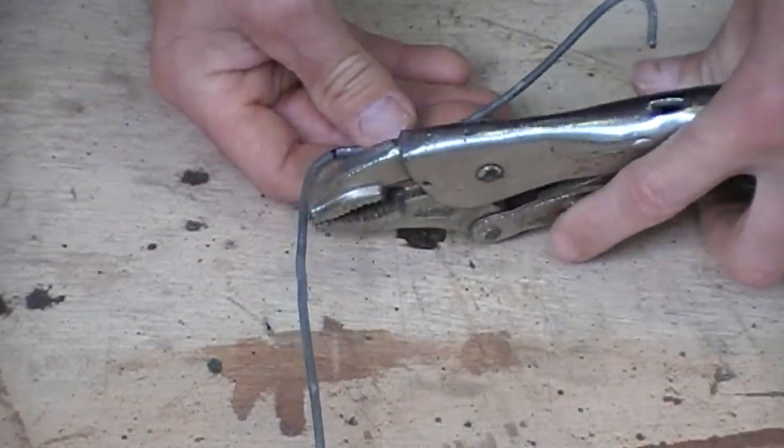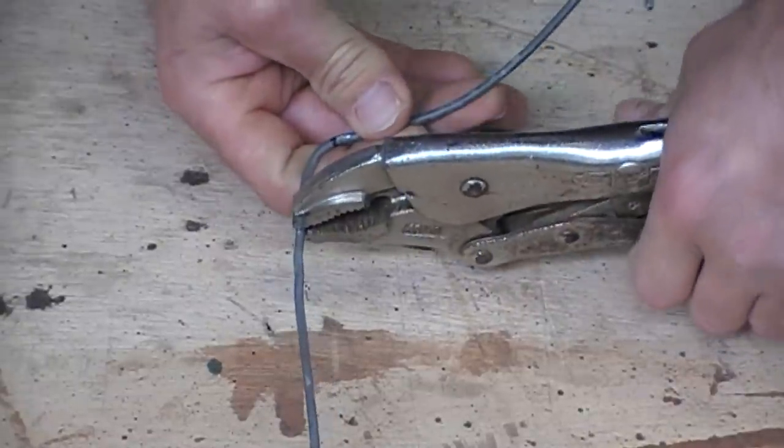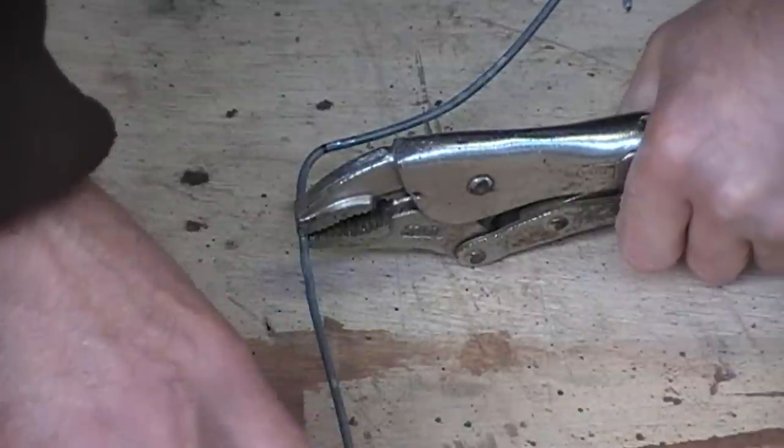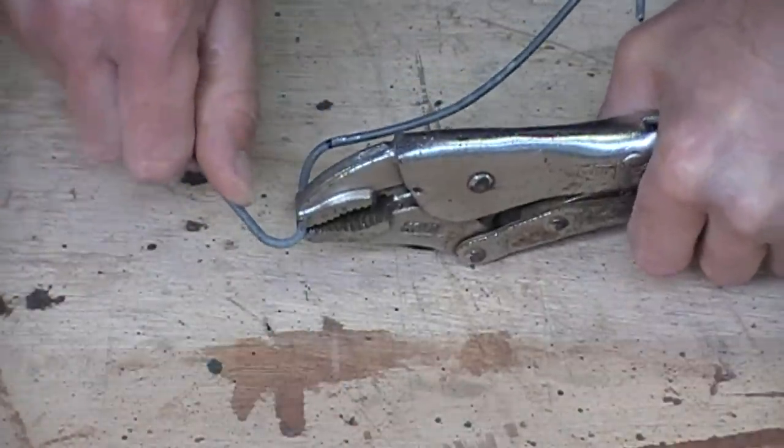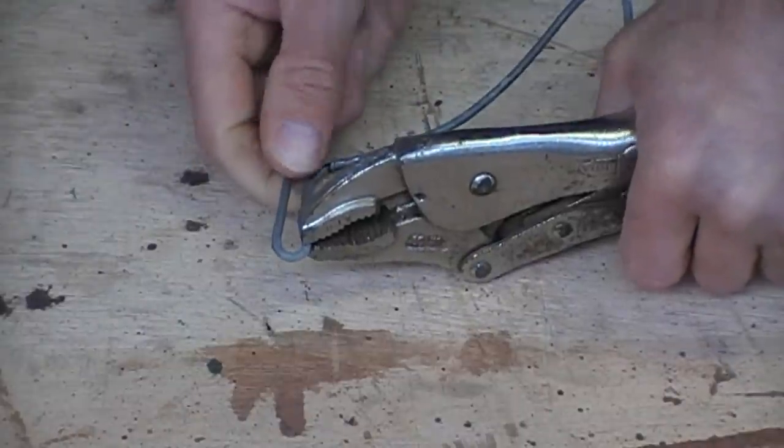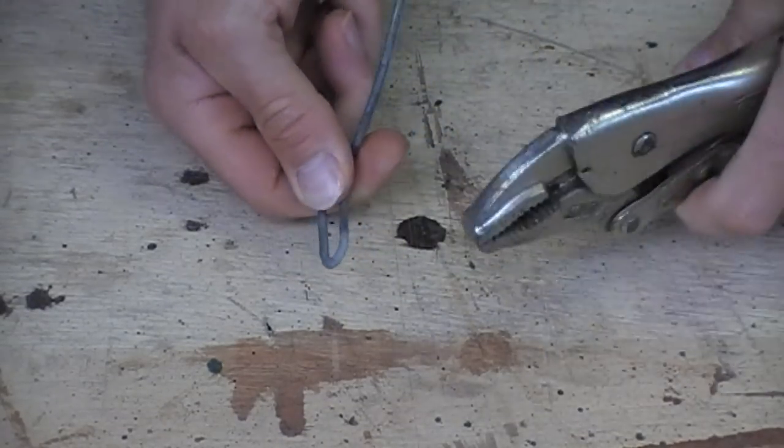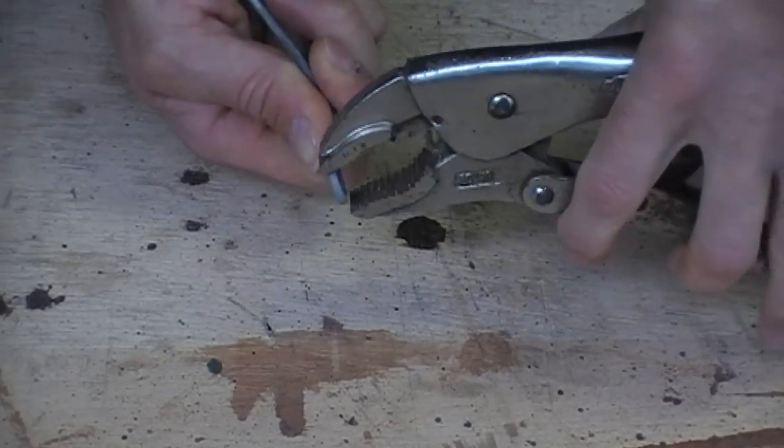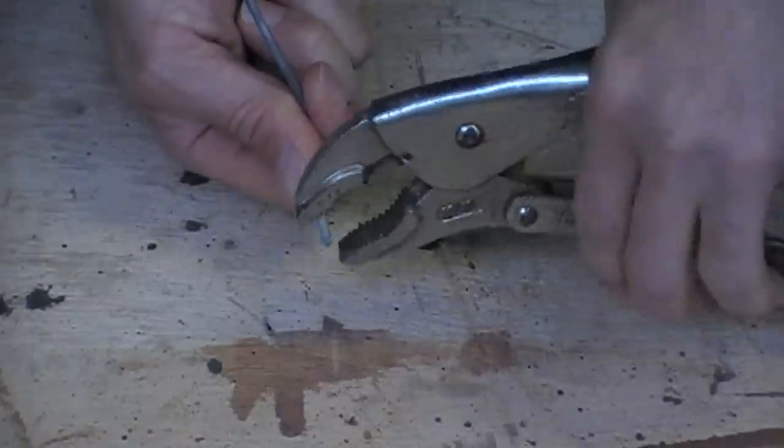Then about an inch or so up from that bend, clamp on with the vise grips again and bend the wire back down round again in a hairpin bend. You might need to use the pliers and crimp the bend in the wire small enough so it fits in the mounting hole in the decoy.